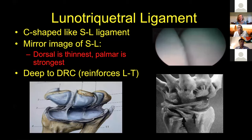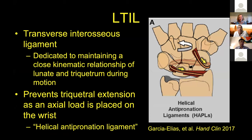The LT ligament is a C-shaped ligament, a mirror image of the SL ligament. Whereas the SL ligament is strongest dorsally, the LT ligament is strongest palmarly, and it lies deep to the dorsal radiocarpal ligament. Marc Garcia-Elias likes to call the LTIL a helical anti-pronation ligament — a transverse ligament dedicated to maintaining a close kinematic relationship of the lunate and triquetrum. With axial load and ulnar deviation, the helicoid articulation of the hamate impacts upon the triquetrum, forcing it into extension, and the LT ligament prevents that uncontrolled extension.